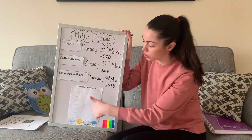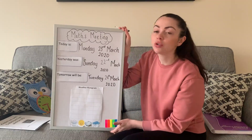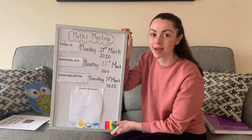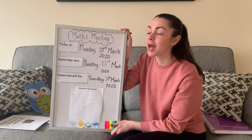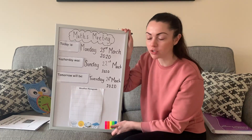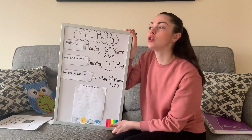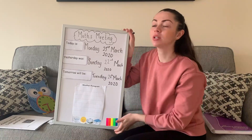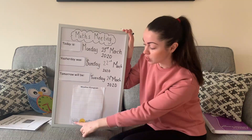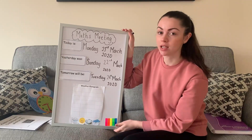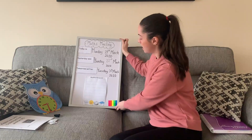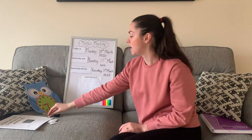Now we're going to go to our weather pictogram and I want you to tell whoever is looking after you today what a pictogram is. A pictogram is a graph that tells us information, and that's something we've been working really hard on from September. So I want you to be a weather watcher and have a little look out the window and see what the weather is like today. Is it snowy? Is it sunny? Is it cloudy? Or is it rainy?